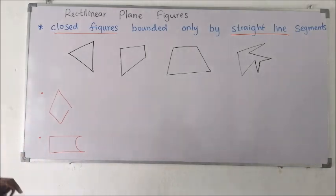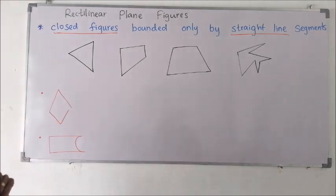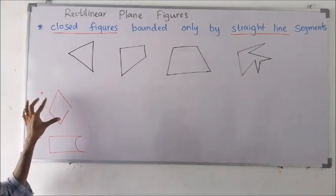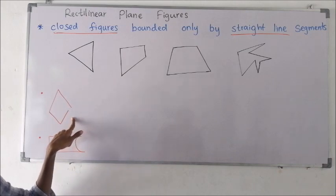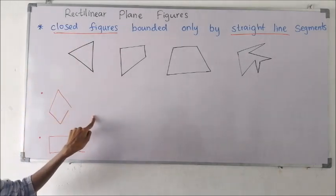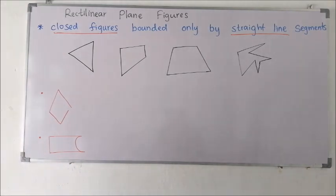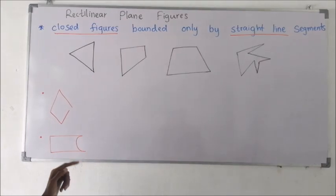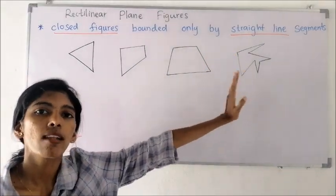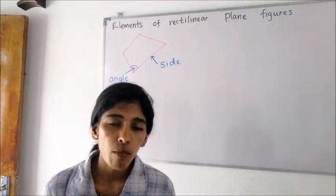Look at these two figures. Is this a rectilinear plane figure? We can see only straight line segments, but there is a small problem — this is not a closed figure, it is an open figure. So this is not a rectilinear plane figure, because rectilinear figures must be closed figures. The next one: this is completely bounded, it is a closed figure, but we can see a curved line segment. In rectilinear plane figures we can observe only straight line segments, so this is also not a rectilinear plane figure.